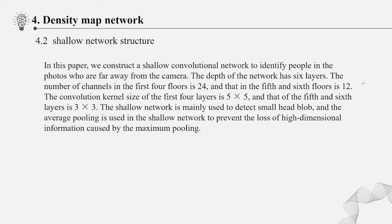Shallow network structure. In this paper, we construct a shallow convolutional network to identify people in the photos who are far away from the camera. The shallow network is mainly used to detect small head blobs. And the average pooling is used in the shallow network to prevent the loss of high dimensional information caused by the maximum pooling.